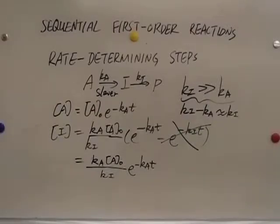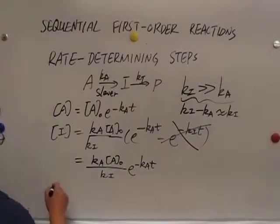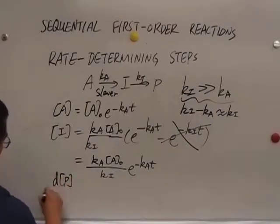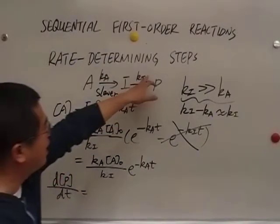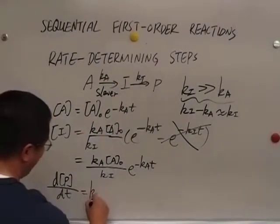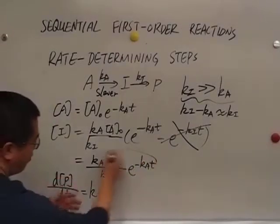This is how I, the concentration of the intermediate, changes with time. And we do want to know how fast the product is formed. dP over dT is Ki times I, so Ki times everything here.